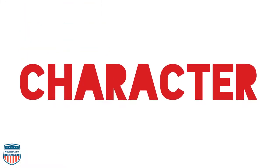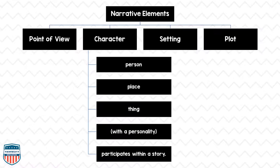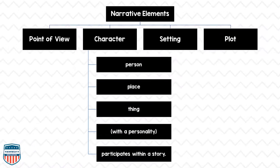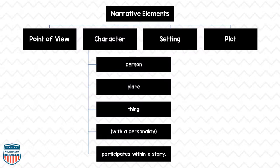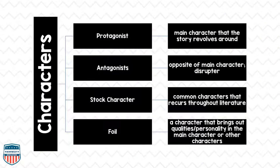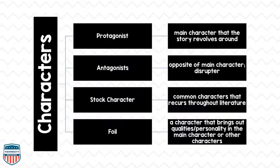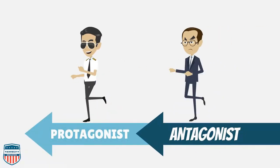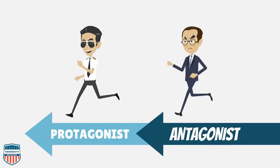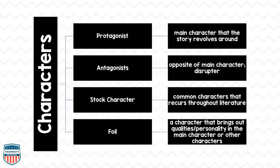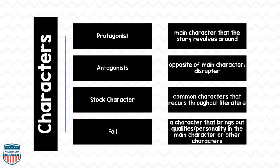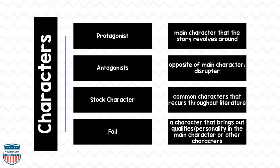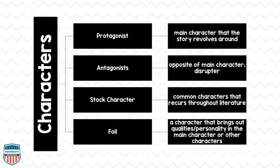What exactly is a character? A character is a person, place, or thing that has a personality that participates within the story. Characters typically fall under four categories: the protagonist, which is the main character that the story revolves around; the antagonist, that's the opposite of the main character and is a disruptor; the stock character, which is a common character that recurs throughout literature; and a foil, someone who brings out the qualities and personality of the protagonist.